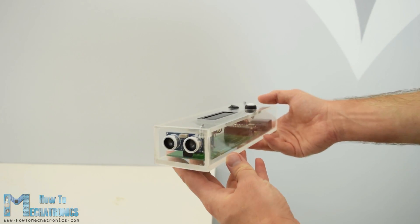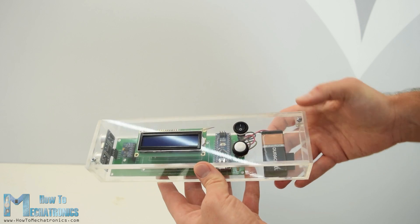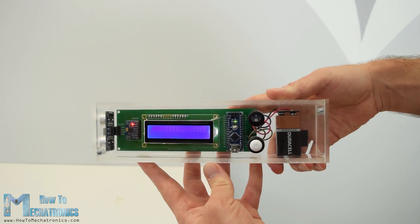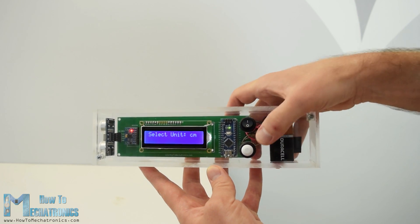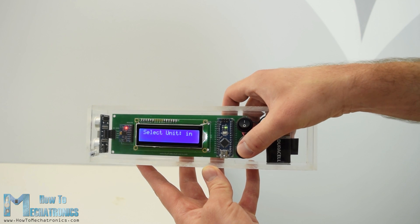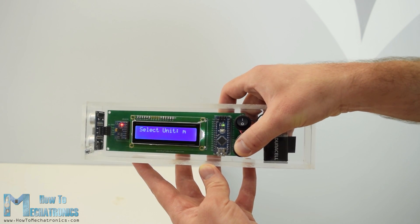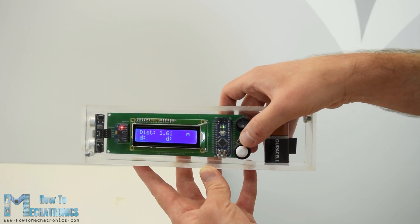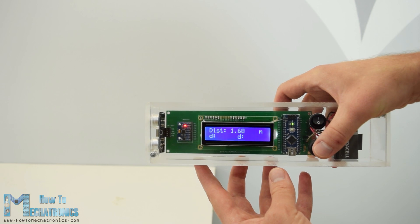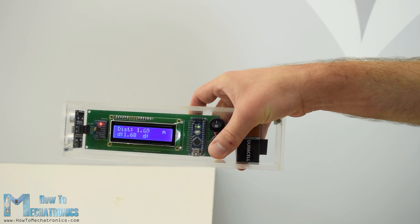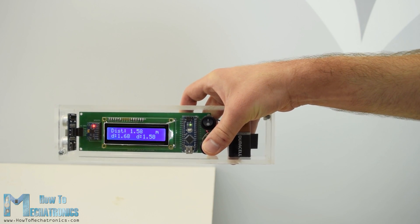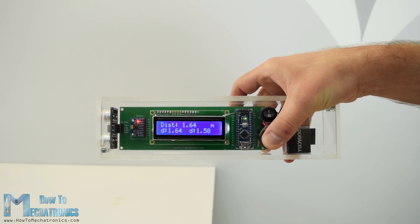We can operate the device with just a single button. Once we power the device, we need to select the units of measurement. By pressing the button, we can toggle through the units, and if we press and hold the button for a while, we will get into the first program where we can measure the distance and store the last two measurements.